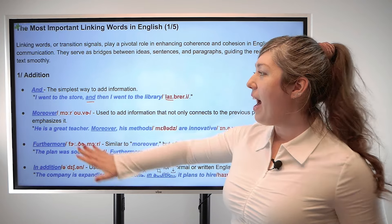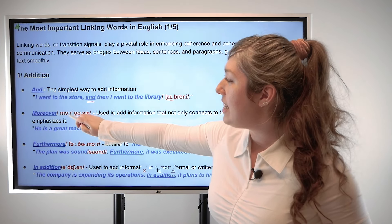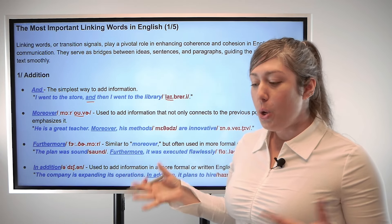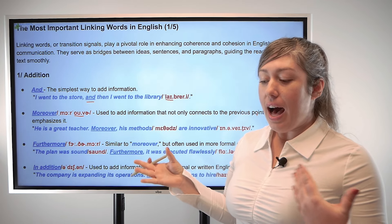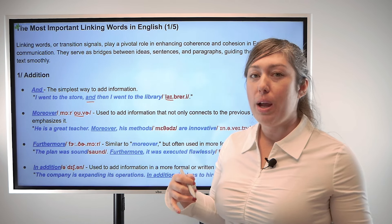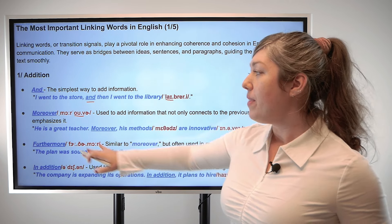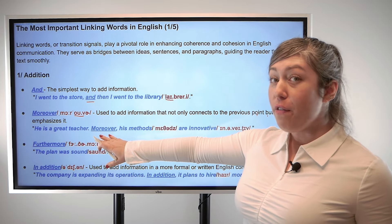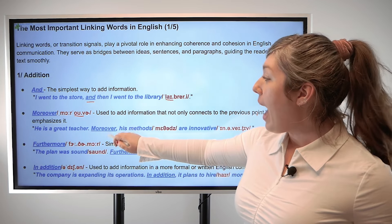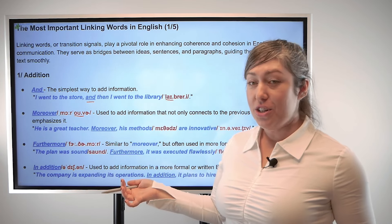Next we have 'moreover,' with the primary emphasis on the second syllable, moreover. We use this to connect information to the previous point, but also to add emphasis. For example, he's a great teacher. Moreover, his methods are innovative. So you're adding more information and you're emphasizing that he's a great teacher.